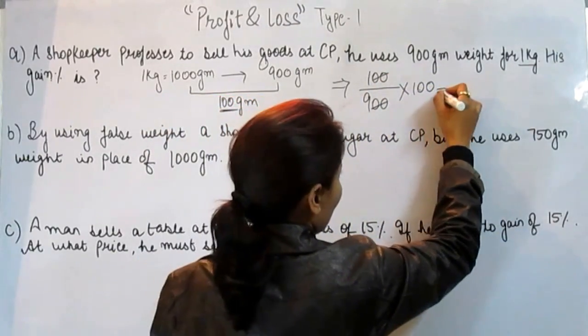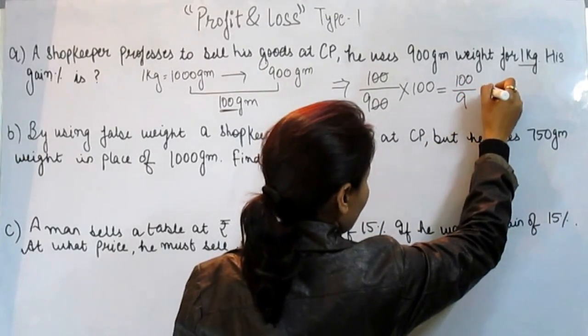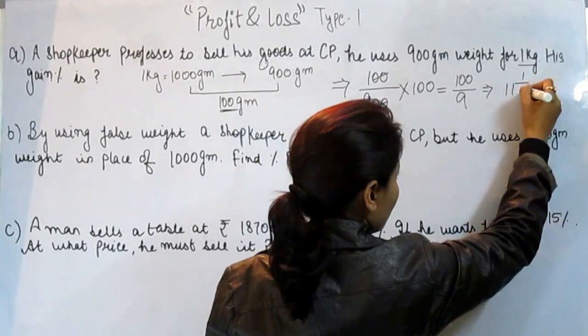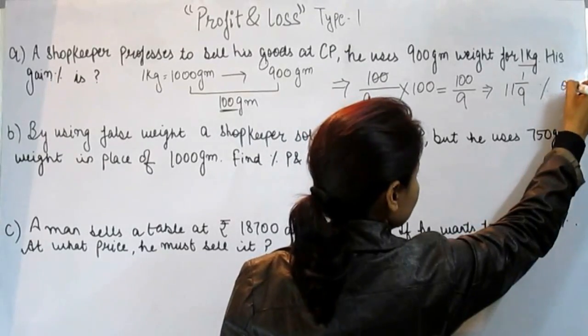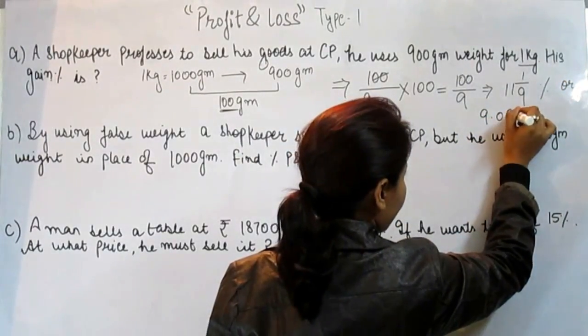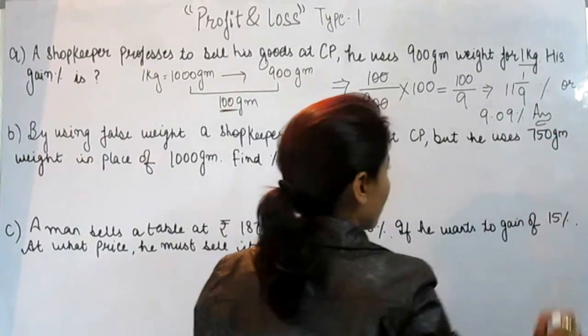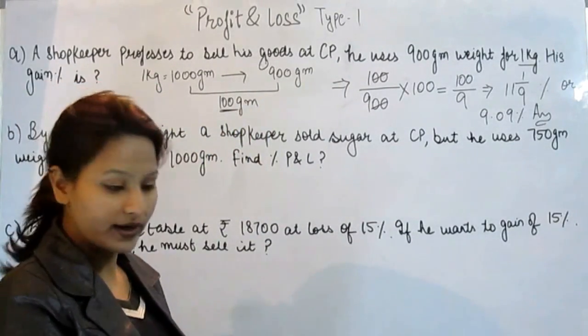Cancel this. What do we get? 100 by 9. And we know the value of 100 by 9 is 11 and 1/9. This is the profit percent which he gets after doing this.